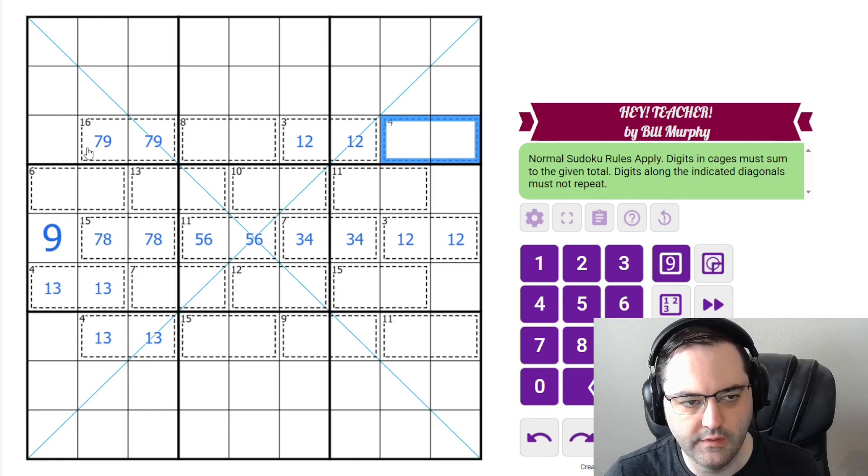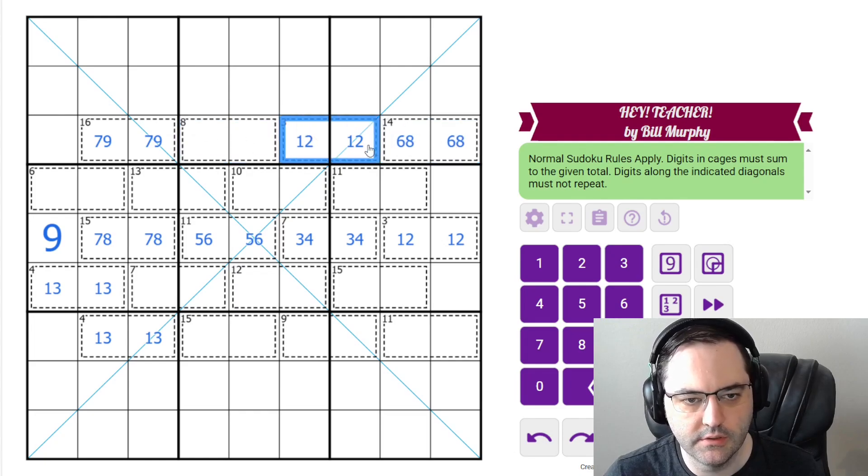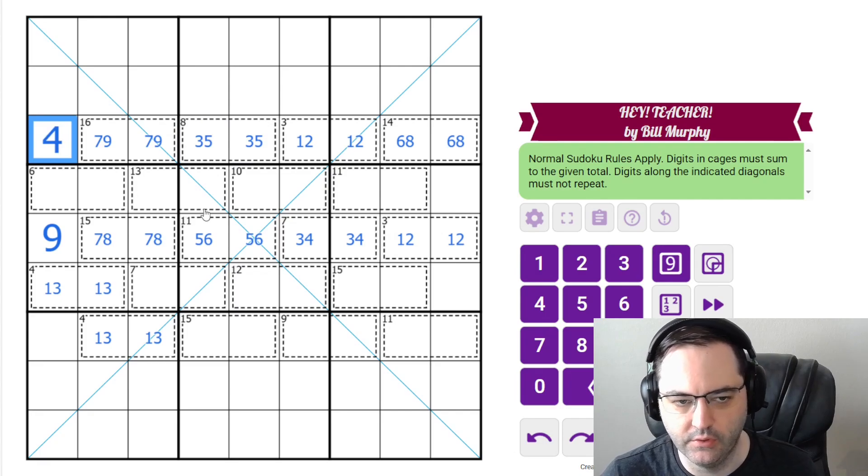Let's look up here. The 14 can't be 5, 9, so it must be 6, 8. The 8 can't contain 1 or 2. It's similar to the 7 here. The minimum is 3, 4. To get 8, we need 3, 5. And then 4 is left here.